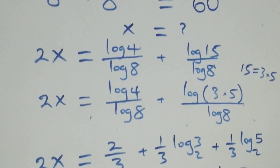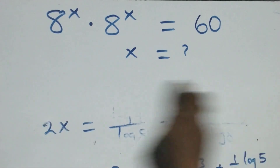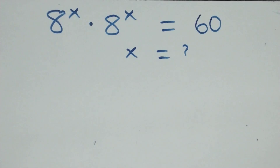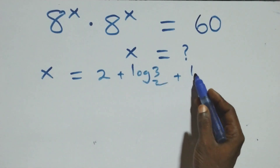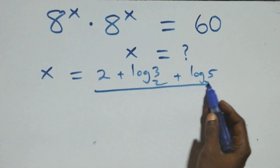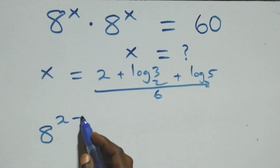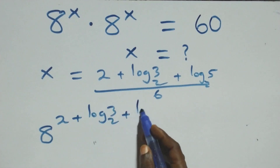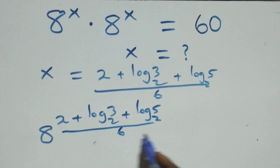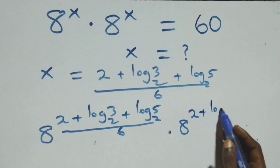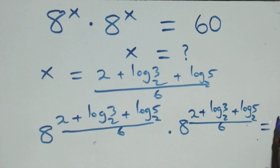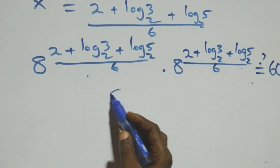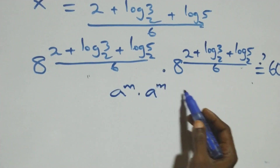Let's check if this satisfies the given problem. We substitute the value of x, which is x equals 2 plus log 3 base 2 plus log 5 base 2, all over 6. What we have becomes 8 raised to power (2 plus log 3 base 2 plus log 5 base 2) over 6, times 8 raised to the same power, which equals 60. When we multiply same base with same exponent, a raised to m times a raised to m equals a raised to 2m.